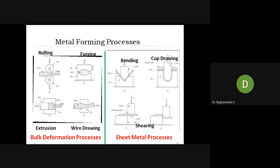So rolling, forging, extrusion — all these come under this metal forming process which lies in the plastic zone, that is after the elastic zone.